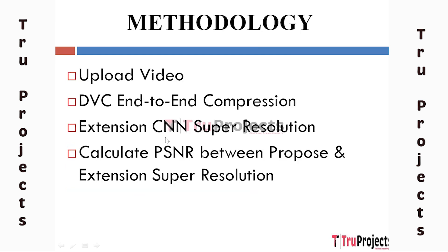To implement this project, we have designed the following modules. The first module is Upload Video, used to upload the sample video. The second module is DVC End-to-End Compression, which refers to the deep video compression technique. It involves using a deep learning encoder and decoder to compress motion images. The encoder learns to represent complex motion patterns in video frames, and the decoder reconstructs the frames from the compressed representation. This end-to-end approach achieves higher compression ratios while maintaining video quality.